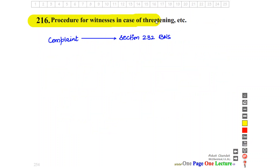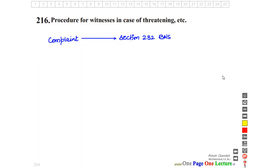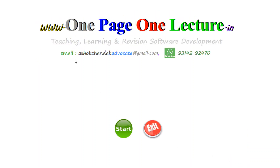The procedure for a witness in a case of threatening is covered under Section 232 BNS. When a threat is given to a witness or a person related to the case, the complaint can be filed under BNS Section 232, and also Sections 233 and 231 of BNS are relevant.